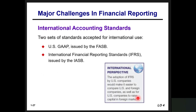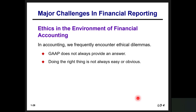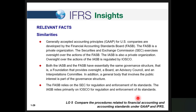There are two sets of standards accepted for international use: U.S. GAAP, issued by FASB, and International Financial Reporting Standards (IFRS), issued by the IASB. Both FASB and the IASB have essentially the same governance structure: a foundation that provides oversight, a board, an advisory council, and an interpretation committee, plus a general body involving the public interest. The FASB relies on the SEC for regulation and enforcement, while the IASB relies on the IOSCO. Both organizations are working together to find common ground for convergence, with a recent example being the new standard on revenue recognition that both organizations support.